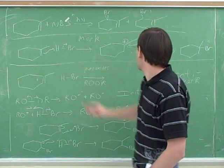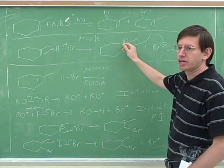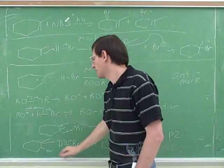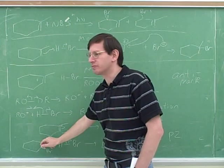Here, the bromine adds second, so it attacks the more substituted carbon where we have the stable carbocation. But here, the hydrogen attacks second, so that's why it ends up on the more substituted carbon, which is the radical.